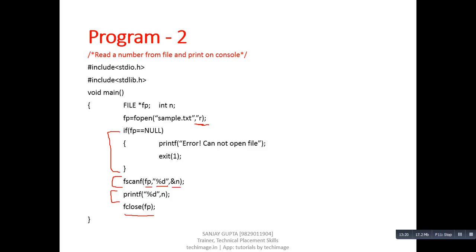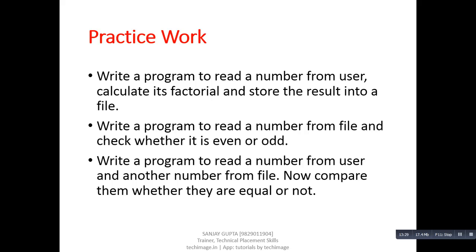With the help of these two programs, you can now implement three practice programs to better understand file handling. First: write a program to read a number from the user, calculate its factorial, and store the result into a file — open the file in 'w' mode. Second: write a program to read a number from a file and check whether it is even or odd — open the file in 'r' mode. Third: write a program to read a number from the user and another number from a file, then compare whether they are equal or not — use 'r' mode for the file. Do practice these programs. Thank you.